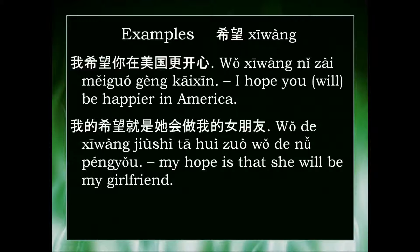The second example is 我的希望就是她会做我的女朋友 — My hope is that she will be my girlfriend. This 做 in this context means 'to be', so 做我的女朋友 means 'to be my girlfriend.' Thanks for watching.